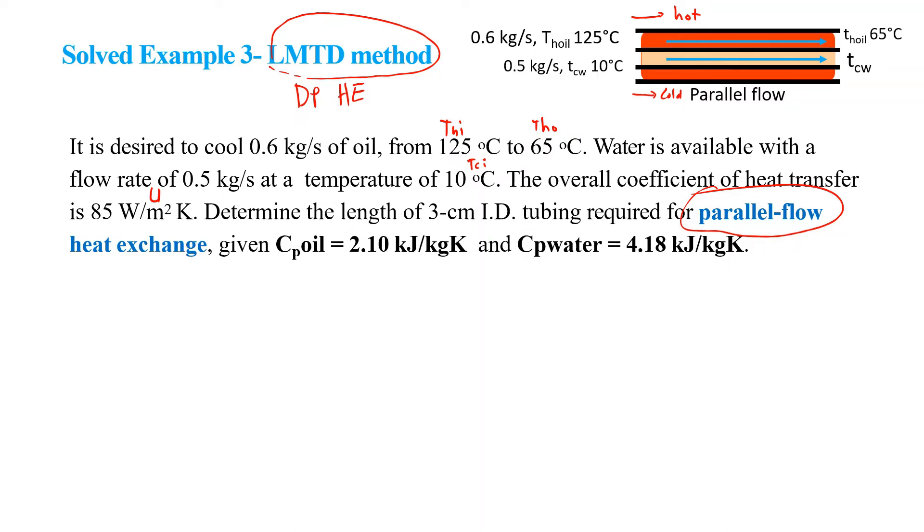The same as before, we can calculate the temperature of water out by using the basic energy balance equation in heat exchanger. We know that Q hot = m hot (oil) × Cp oil × ΔT oil, and this equals Q cold = m cold × Cp cold × ΔT cold. If we know ΔT cold, we will be able to find the temperature of water coming out.